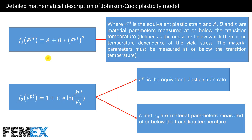Now I want to talk about the detailed mathematical description of the Johnson Cook Plasticity Model. This is the detailed mathematical description of the F1 function, where this variable is the equivalent plastic strain and A, B, and N are material parameters measured at or below the transition temperature. The transition temperature is defined as the temperature at or below which there is no temperature dependence of the yield stress.